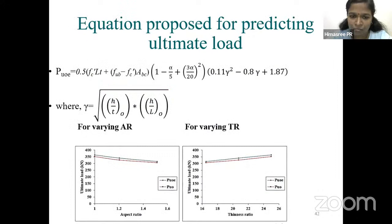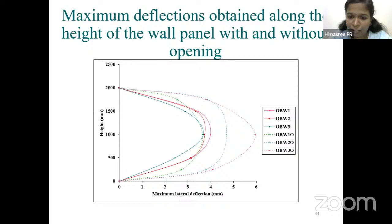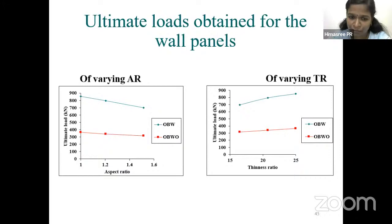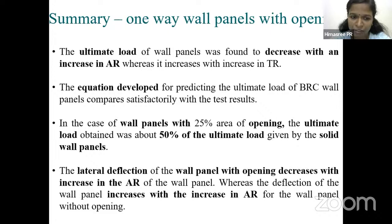Existing equations proposed for RCC wall panels with openings did not compare satisfactorily when substituted with bamboo reinforced concrete values, so a new equation was developed and found to compare satisfactorily with test results. The presence of opening resulted in approximately twice the mid-span deflection compared to solid wall panels, and the ultimate load was reduced by 50%. The equation developed compares adequately with the test results.